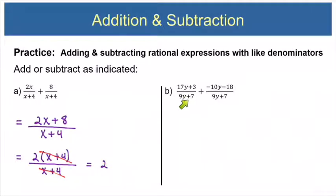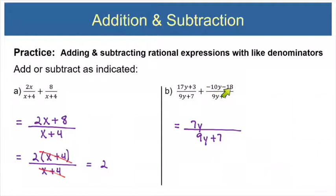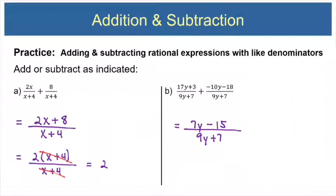Let's try Part B. Notice that the denominators are the same and we're adding. To add these together, all we have to do is combine like terms in the top. 17y plus negative 10y adds up to 7y, and 3 plus negative 18 adds up to negative 15. The denominator is 9y plus 7, because when you add fractions the denominator stays the same. We need to ask if this can be simplified, but the answer is no — there's no GCF in the top or the bottom — so this is our final answer.